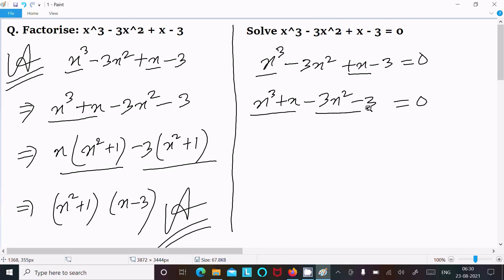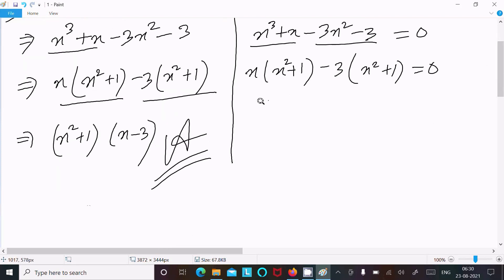Here x is the common. So x(x² + 1). Here minus 3 is the common, so -3(x² + 1) = 0. Now let's take common x² + 1 is the common between these two. And here (x² + 1)(x - 3) = 0.